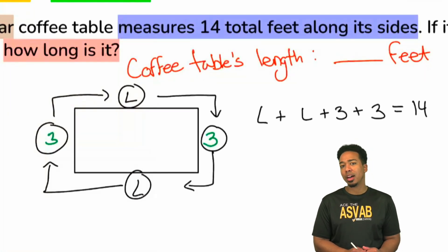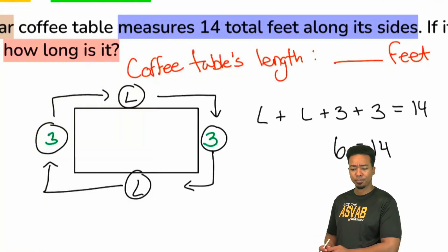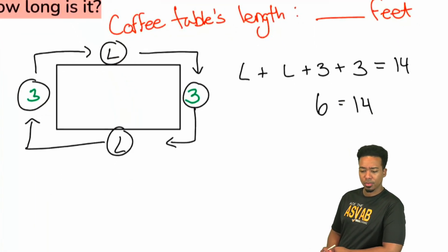Everybody, if we have L plus L plus three plus three, we can combine some like terms. We know that three plus three is six, but what is L plus L going to be, everybody? What is L plus L going to be? Yeah, it's going to be two L, two of those lengths.